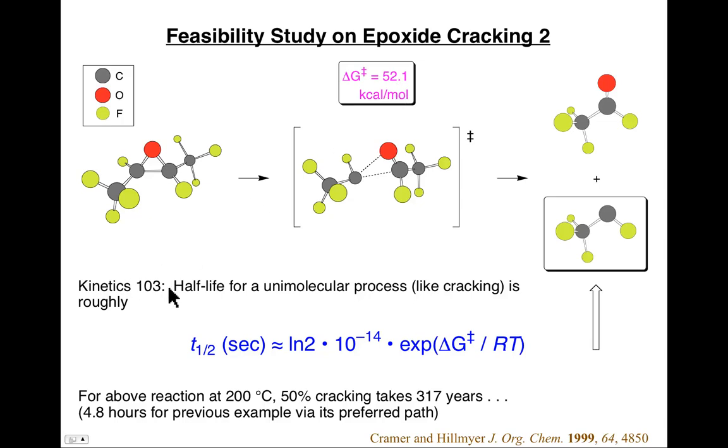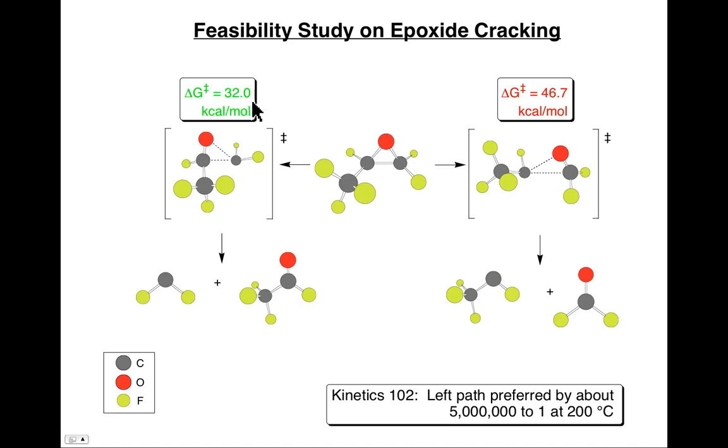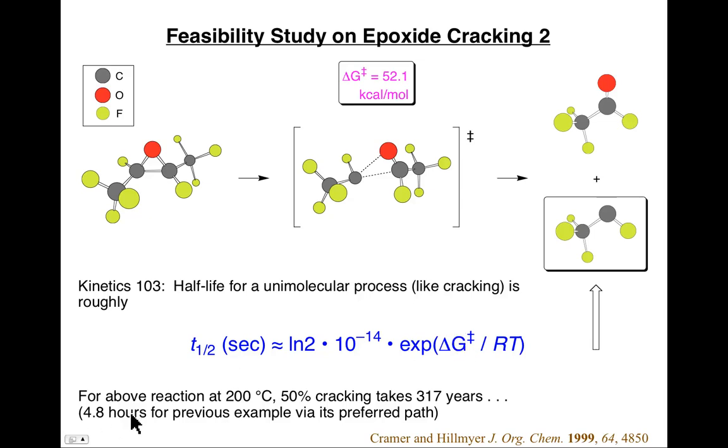And so, here's the last thing we can do with kinetics. You can actually manipulate the transition state theory expression in order to compute the half-life for a unimolecular process. That is, how much time will it take for half of this molecule to be consumed by this cracking reaction? And the equation turns out to be that the half-life is equal to log 2 times 10 to the minus 14. And again, the actual expression is about 13.4 or so, but we're just rounding things here. Times E to the delta G double dagger over RT. Turns out if you plug in 52.1 here and divide by 0.6, which would be appropriate if you're using kcals per mole, then the half-life to crack this is about 317 years at 200 degrees C. And incidentally, just as a sanity test in the actual experimental substrate, which you might recall, we'll just flip back here, had a free energy of activation of 32. If you plug 32 in here, you get a half-life of about 5 hours.